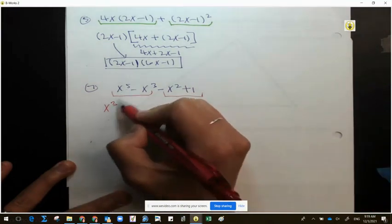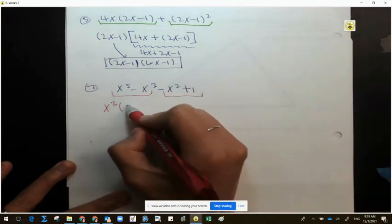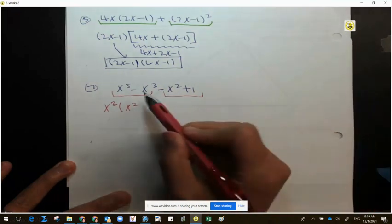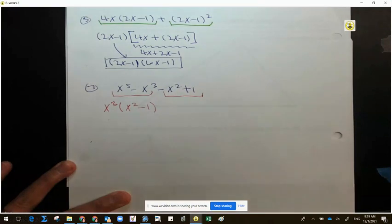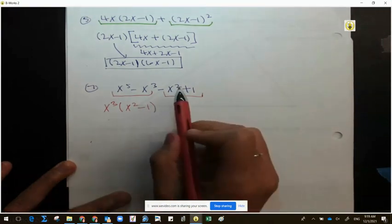So then from x to the 5th, if I take out x to the 3rd, I get x squared. When I take everybody out, we get the understood 1. It's not 0.